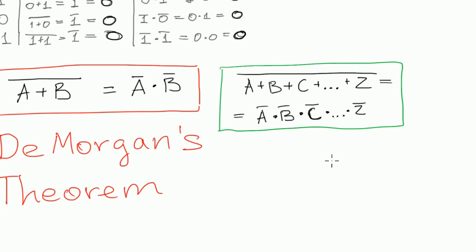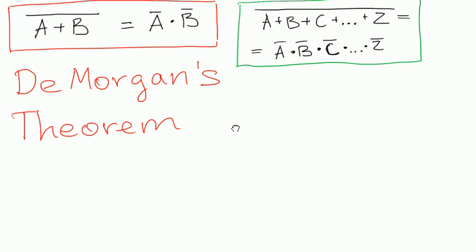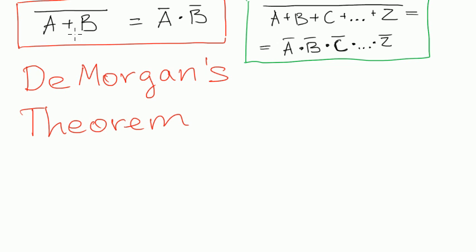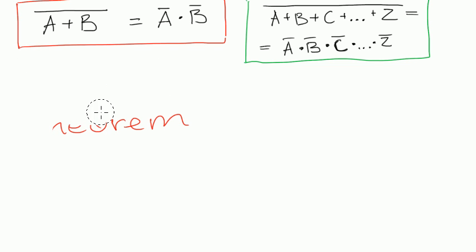And the other case of De Morgan's Theorem is this one. We have A plus B all negated, but what about this one?